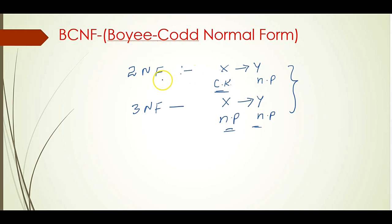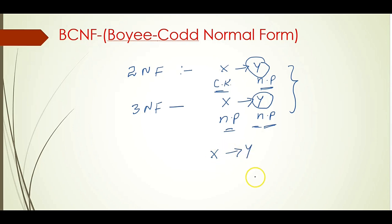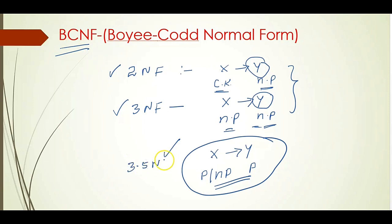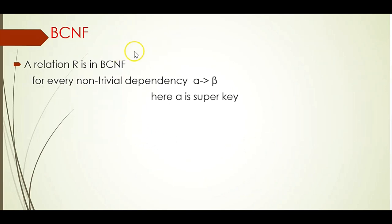In both the second and third normal form scenarios, the right-hand side Y is a non-prime attribute. But sometimes there is a dependency X derives Y where Y is a prime attribute dependent on either another prime attribute or a non-prime attribute. Neither the second normal form nor the third normal form deals with this type of situation. So to handle these situations, we extend to BCNF, which is sometimes also called 3.5NF because it is a bit of an extension of the third normal form.